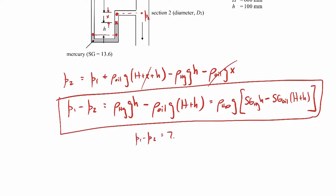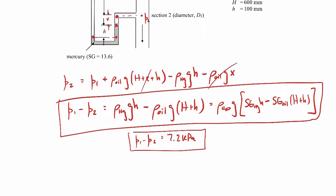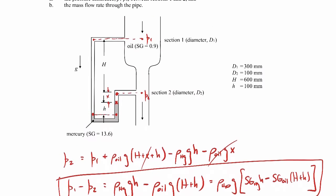If you plug in the values given in the problem — the different heights and specific gravities — p1 minus p2 comes out to be 7.2 kilopascals. That's the first part of the problem. Now for the second part, we're asked to find the mass flow rate through this pipe section.